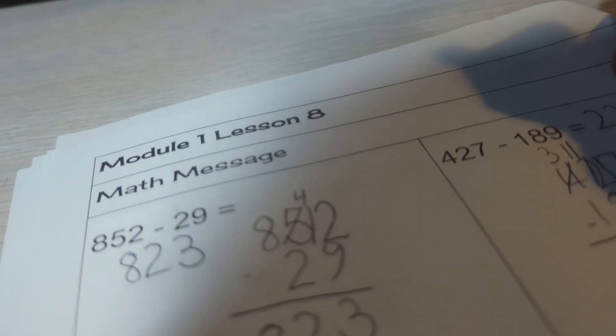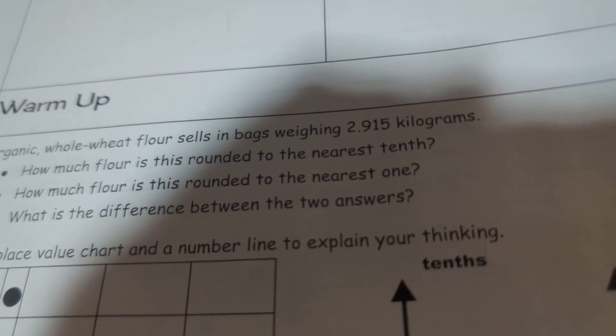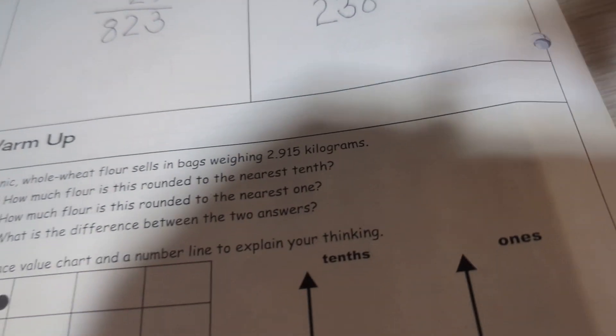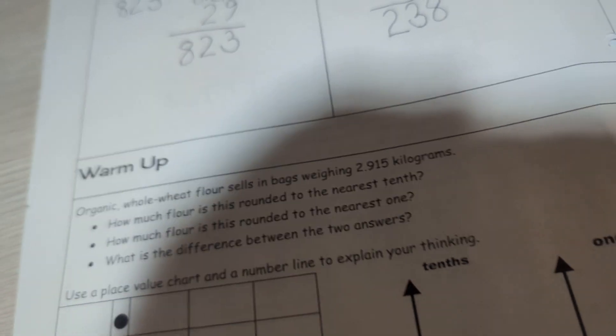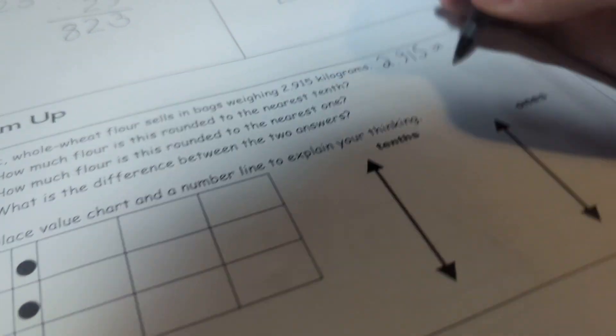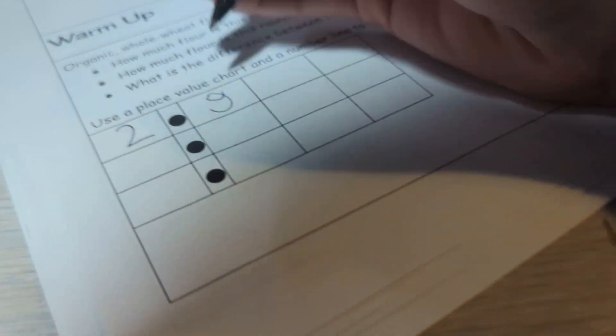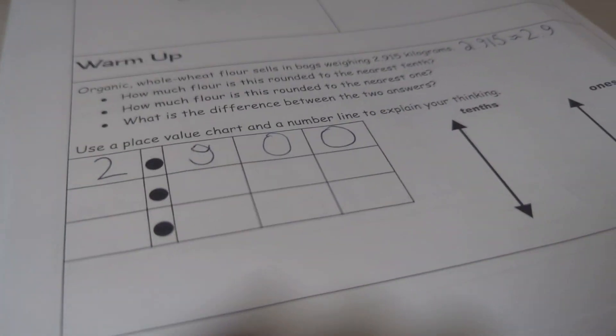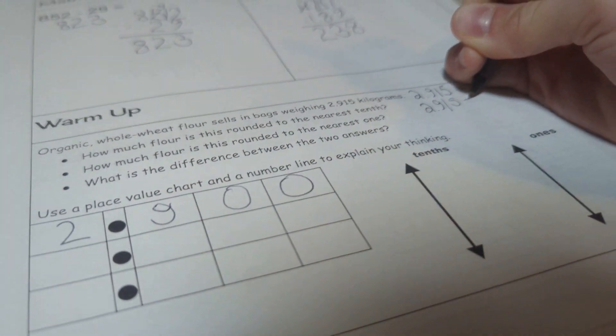Now here's the warm-up. Organic whole wheat flour sells bags weighing 2 and 950 thousandths kilograms. How much flour is this rounded to the nearest tenths? So it's actually rounded to 2.9. How much flour is this rounded to the nearest one? So it's rounded to 3.